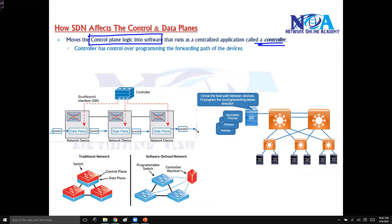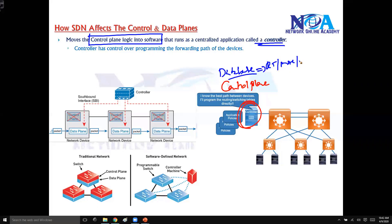Now this means we do have a controller. The control plane job is to build the database which is required to forward traffic — just like building the routing table, or learning the MAC address for which port traffic should be forwarded. So the control plane now resides on the controller.